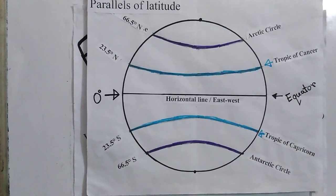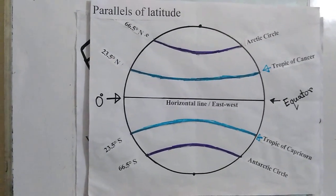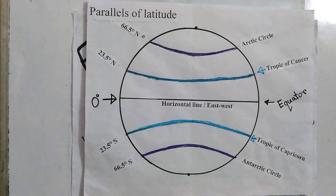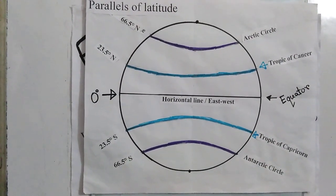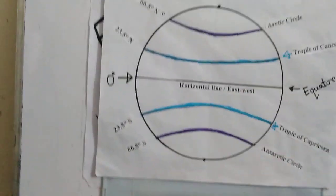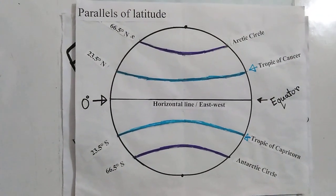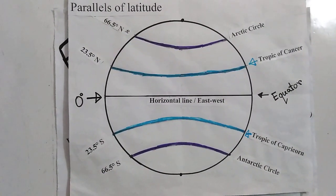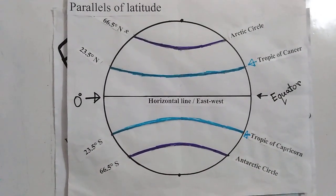Now, latitude. The angular distance of any place or region from the equator, either to the north or south, is called latitude. Latitude is measured in degrees. The value of the equator is 0 degrees. The latitude of the north pole is 90 degrees north, and that of the south pole is 90 degrees south. The highest latitude is 90 degrees. One degree of latitude contains 60 minutes, and one minute of latitude contains 60 seconds.